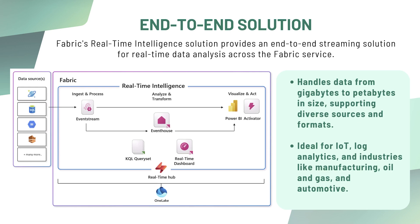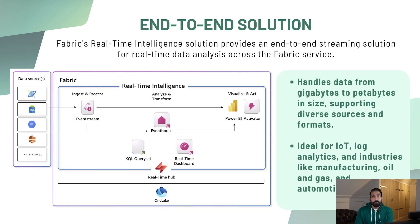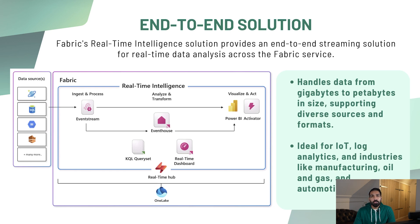Here's the end-to-end solution: you have different data sources such as Cosmos DB, SQL Server, or any events generating real-time data. You can ingest them using Event Streams in real time, create real-time dashboards, and generate alerts using Microsoft Fabric Activator. You can also run KQL queries on data stored in the Event House for deeper analysis, and everything can be stored in the real-time hub or OneLake for further historical storage.